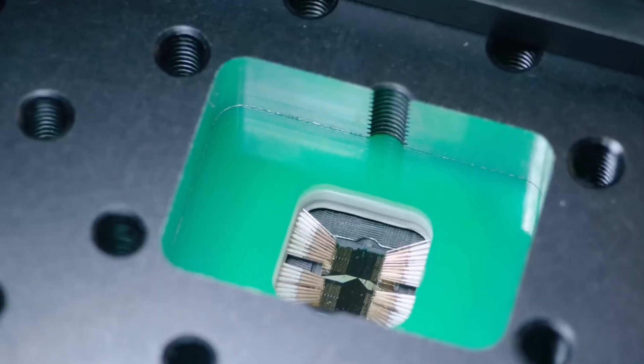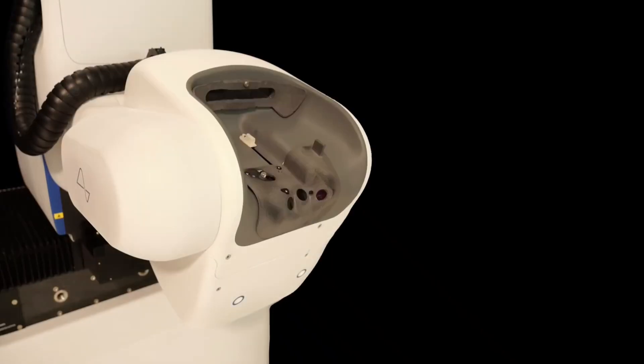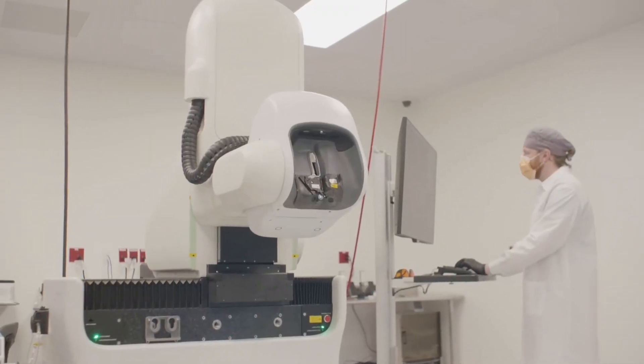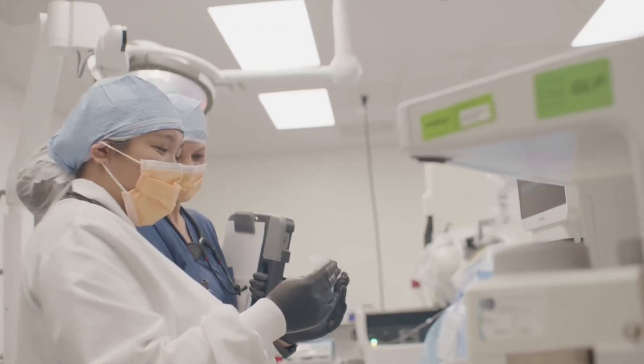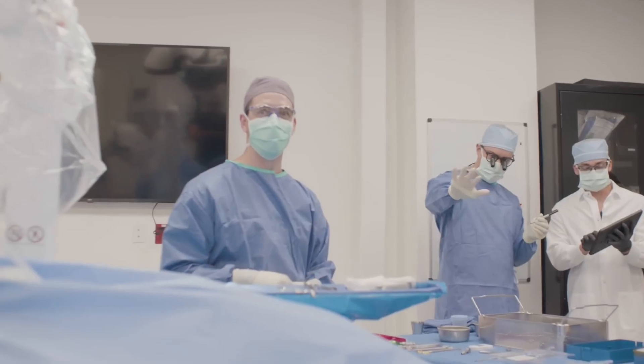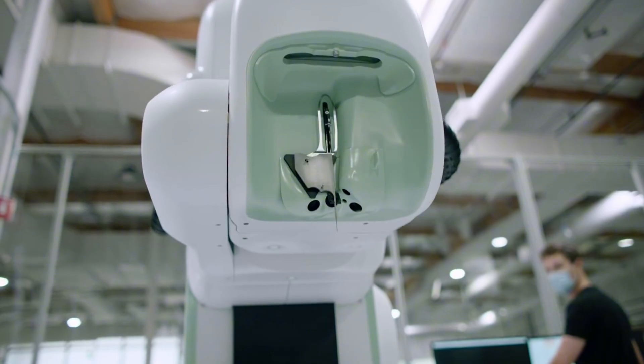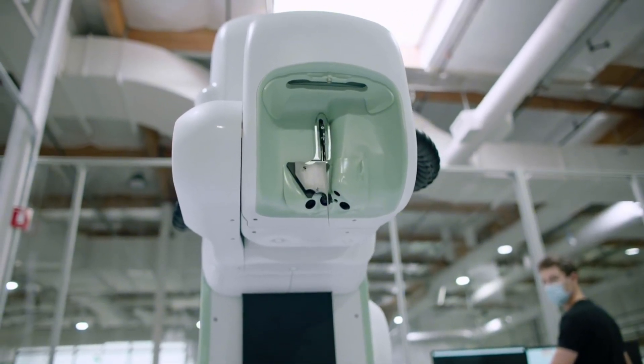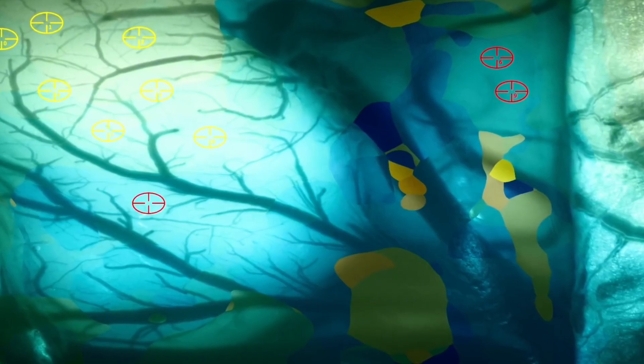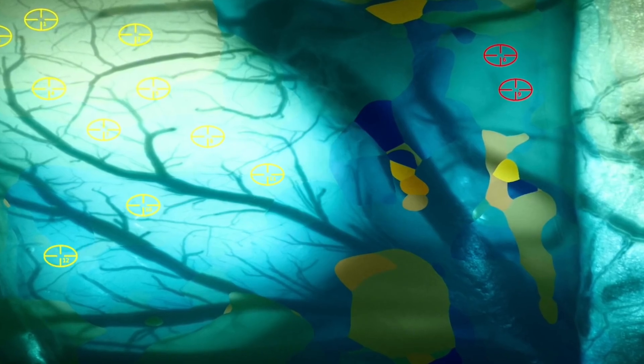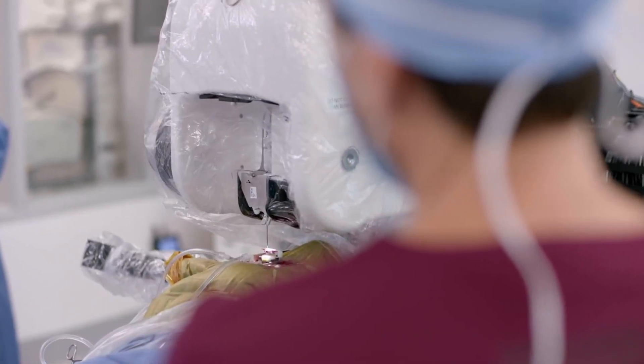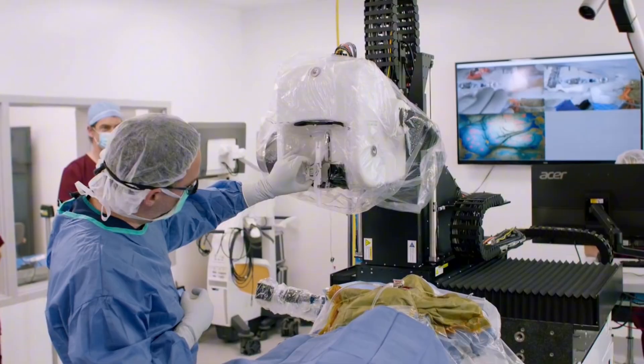Next up, we have the Autonomous Surgical Robot. This isn't your ordinary medical device. The R1 Surgical Robot is designed to perform the delicate task of implanting the Neuralink device into the brain. It's capable of inserting six threads per minute, each containing 16 electrodes. This precision and speed minimize the chance of human error, making the procedure safer and more reliable. It's a groundbreaking step in the field of neurosurgery.